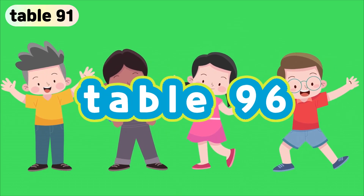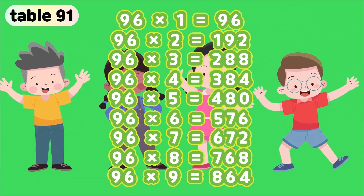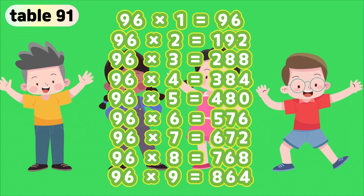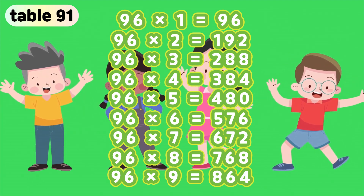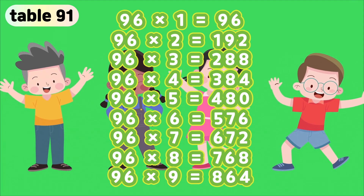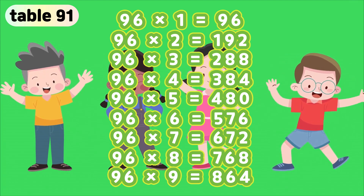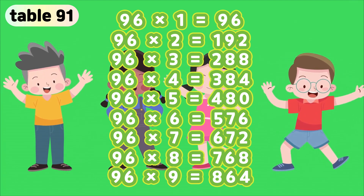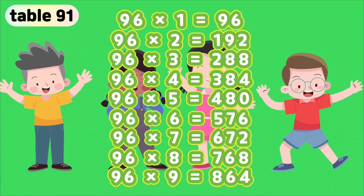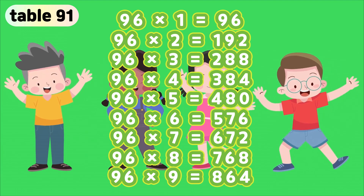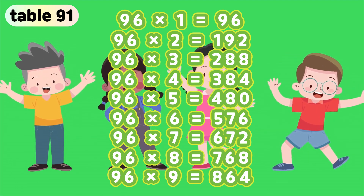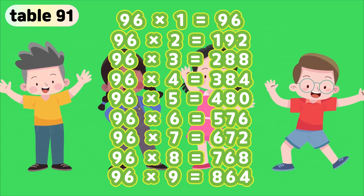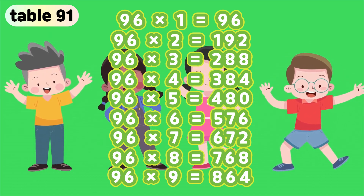Table 96. 96 times 1 is 96. 96 times 2 is 192. 96 times 3 is 288. 96 times 4 is 384. 96 times 5 is 480. 96 times 6 is 576. 96 times 7 is 672. 96 times 8 is 768. 96 times 9 is 864.